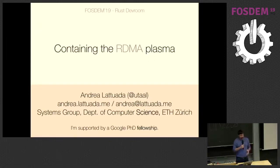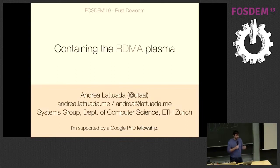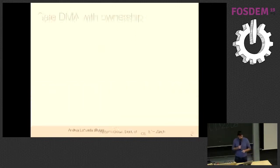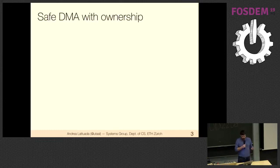At some point Andrea started playing with high-performance networking, kernel-bypass ways to do better than what TCP over a kernel can offer, and stumbled upon RDMA — a well-known technique for doing fast networking without relying on the kernel TCP stack. The talk will cover how Rust ownership and safety semantics can make RDMA look a little safer than one might expect.